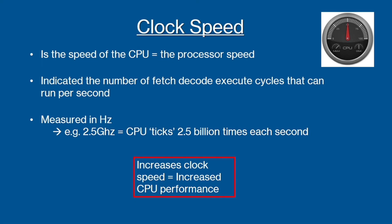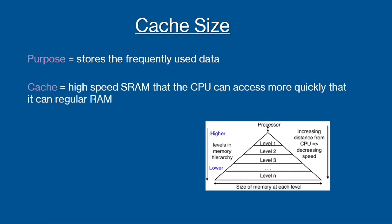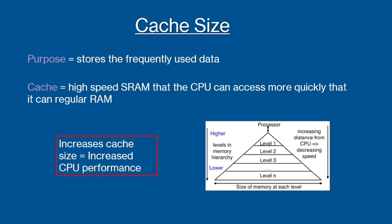The next factor that affects the performance of the CPU is cache size. Cache memory stores the frequently used data, and it's high speed static random access memory, or SRAM, that a computer microprocessor can access more quickly than it can regular RAM. This is why it's more expensive and why there's only limited amounts on a computer.